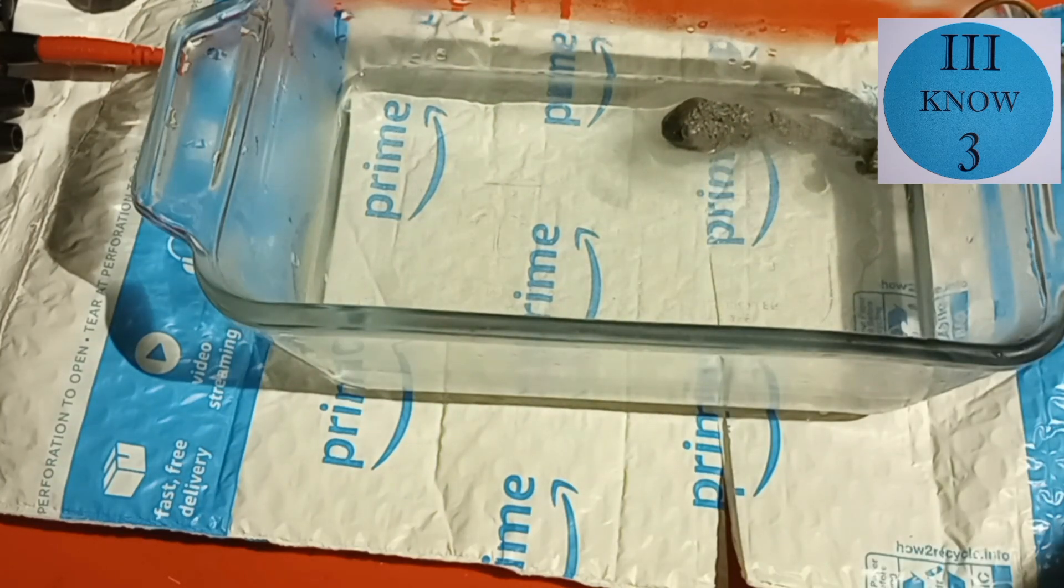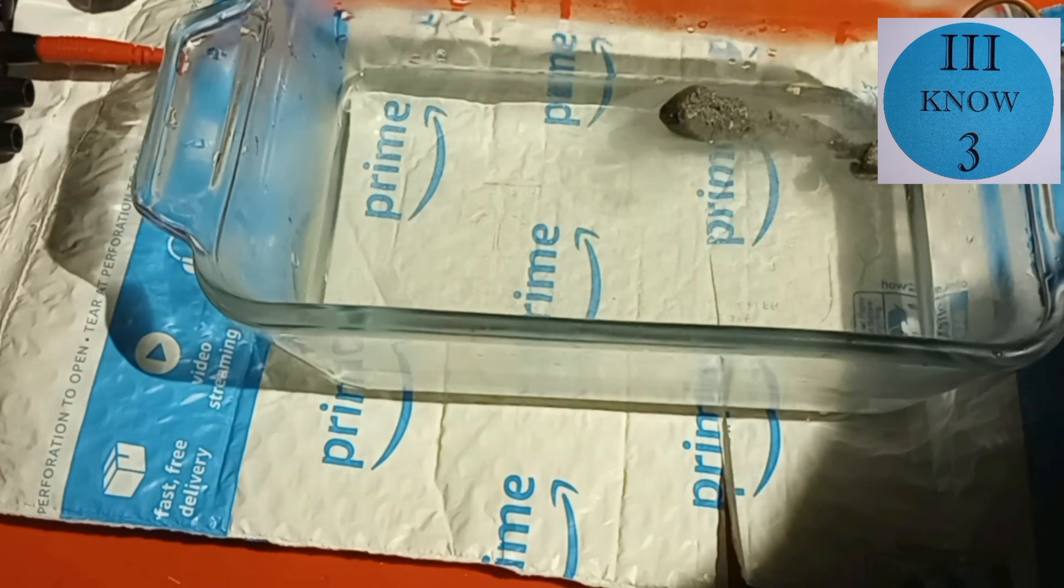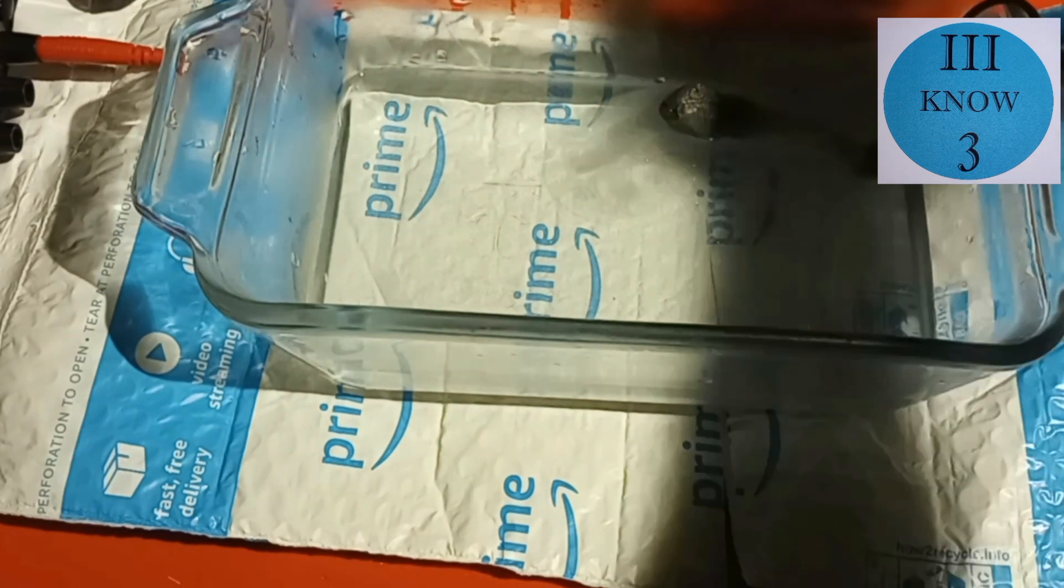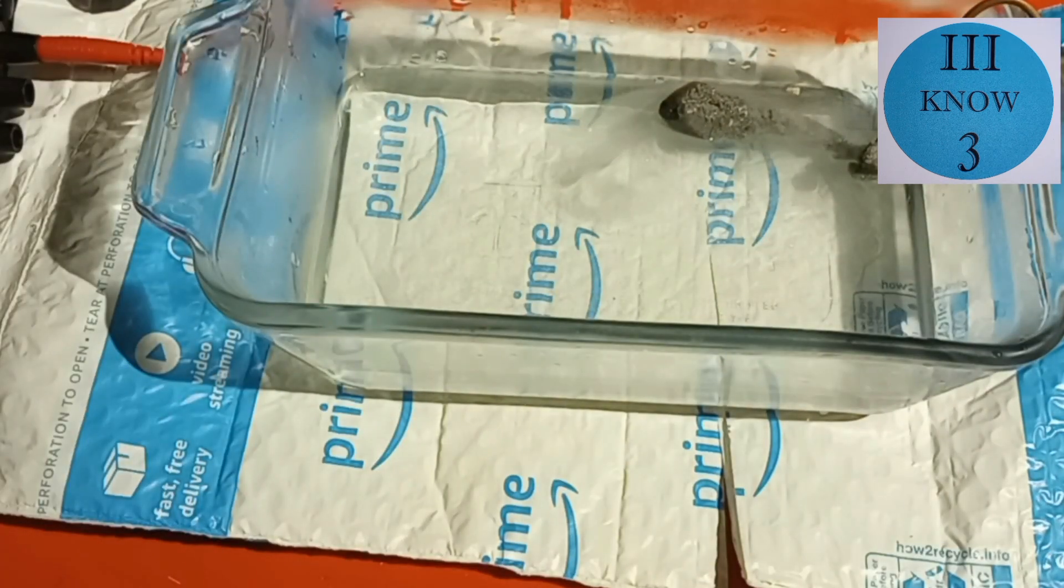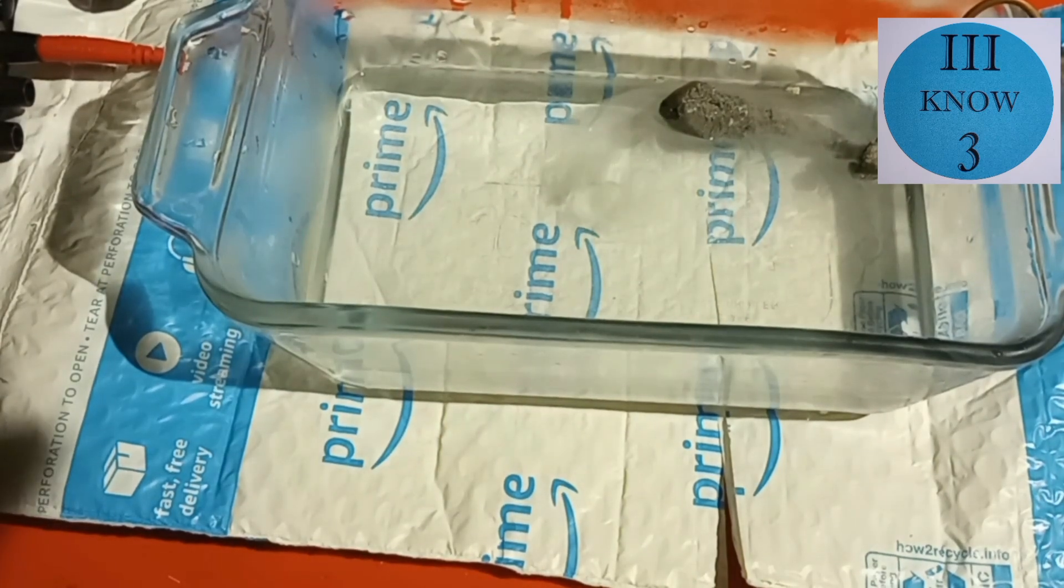we're going to use one of the cathodes that I left the spongy mossy tin substance on. I actually compressed that down as it was going so it would be more tightly packed and stick to the copper wire better.